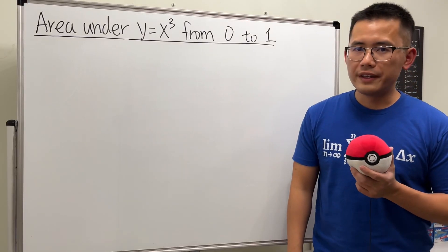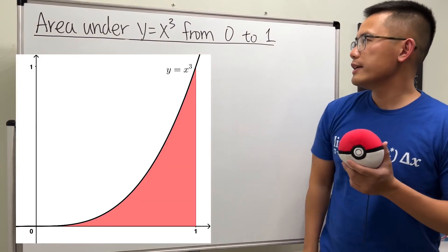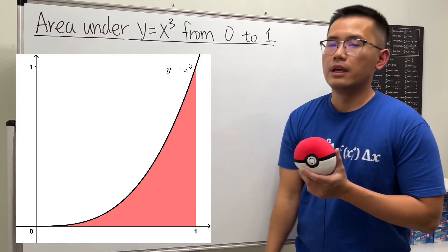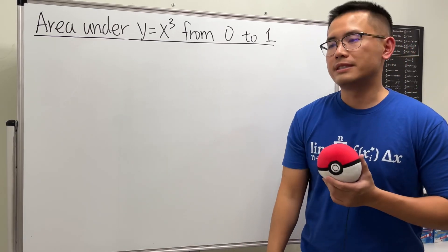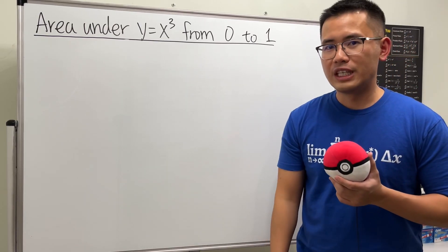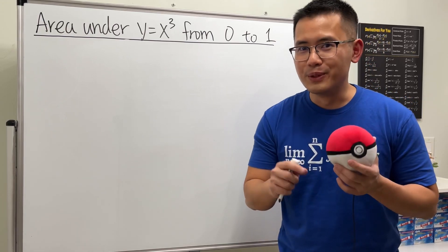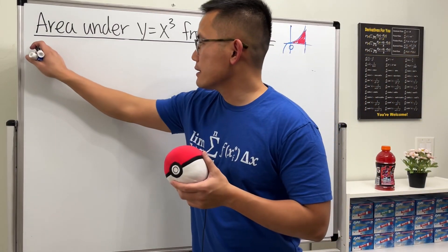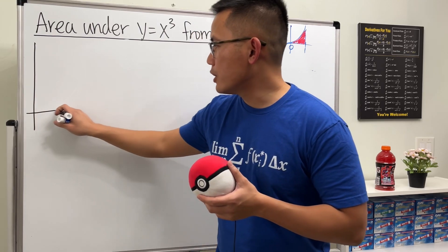The goal for this video is to find the area under the curve y = x³ from zero to one. We'll use rectangles to help us out, and at the end I'll give you a bonus: using integrals to find the area. Now let's go ahead and look at a bigger picture.